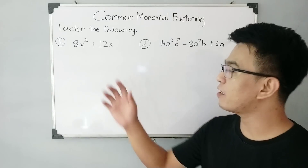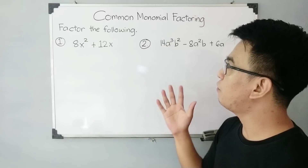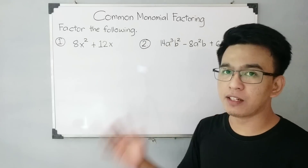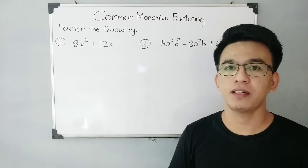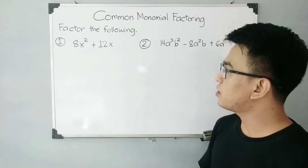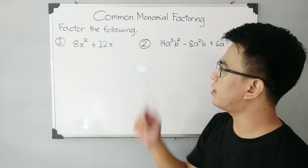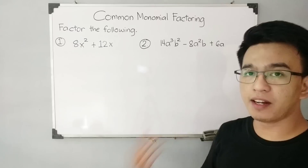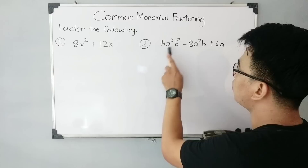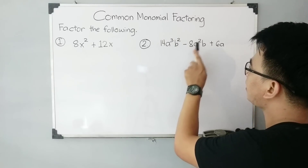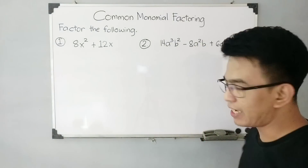So basically, I have here two examples for us to understand how common monomial factoring works. The first one is 8x squared plus 12x, and the other example is 14a cubed b squared minus 8a squared b plus 6a.